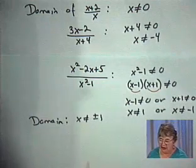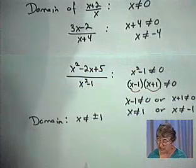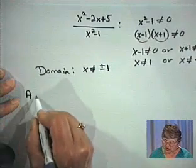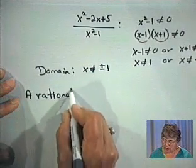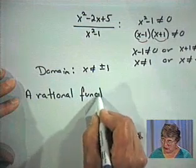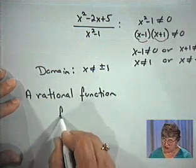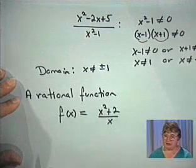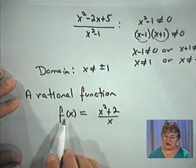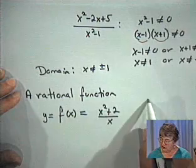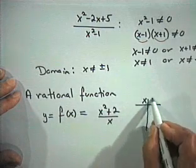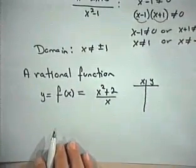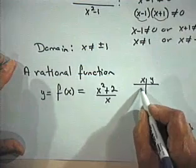Because rational expressions are expressions, we can also think of rational functions. A rational function is a function defined as a rational expression. For example, f(x) equals x squared plus 2 over x. Given a value of x, we can find the value of the function — we can call that value y — and because it's a function, we could graph it. We can find points on the graph using a table of values.